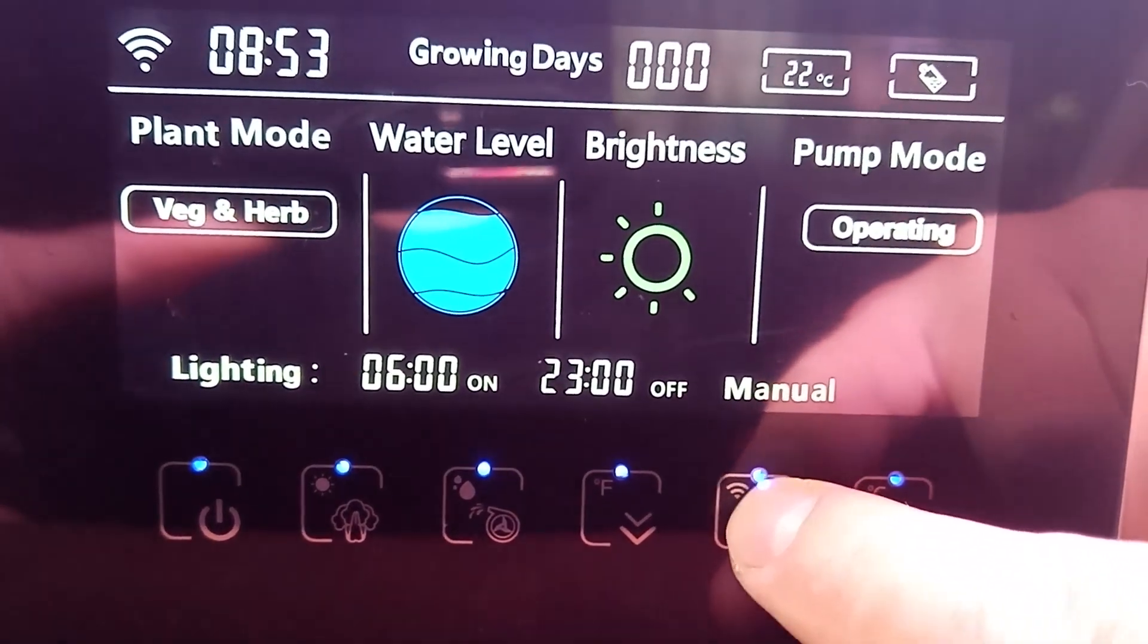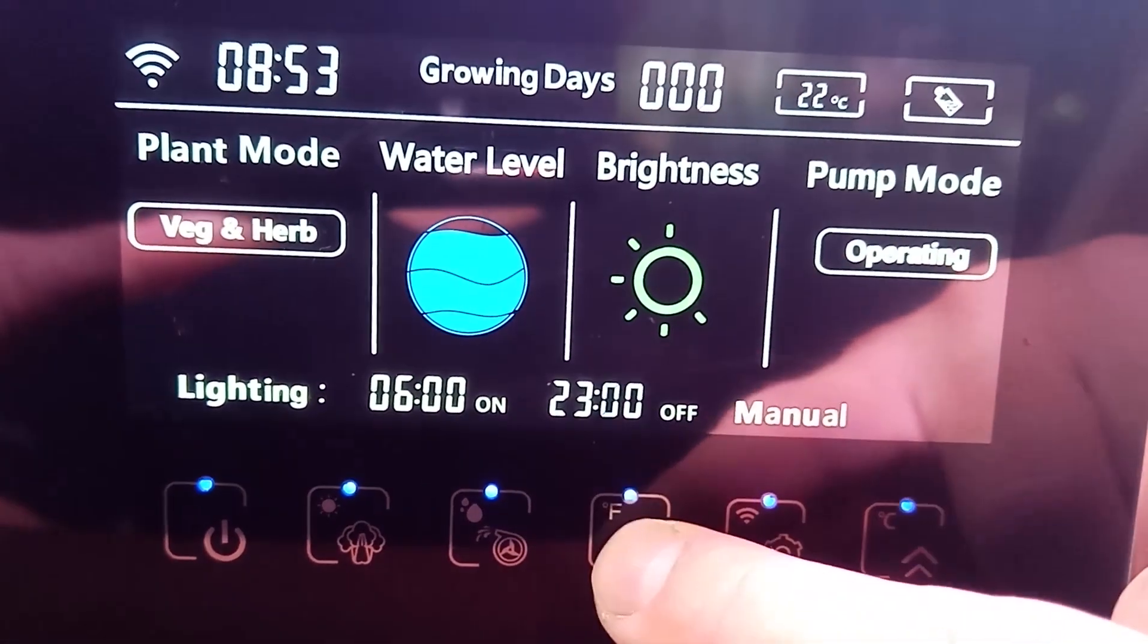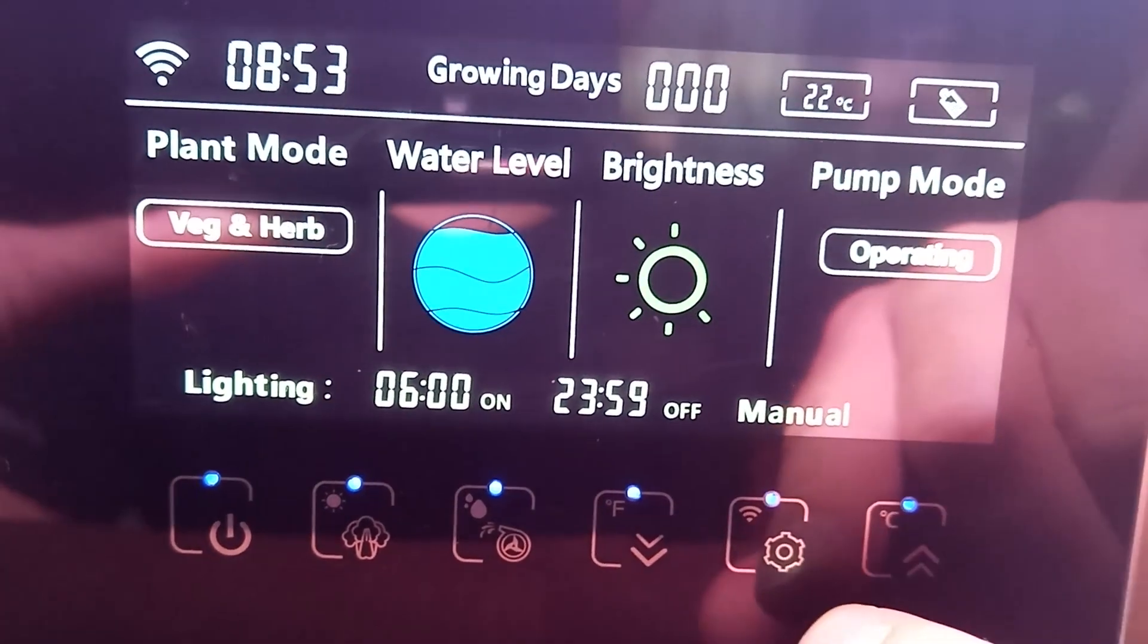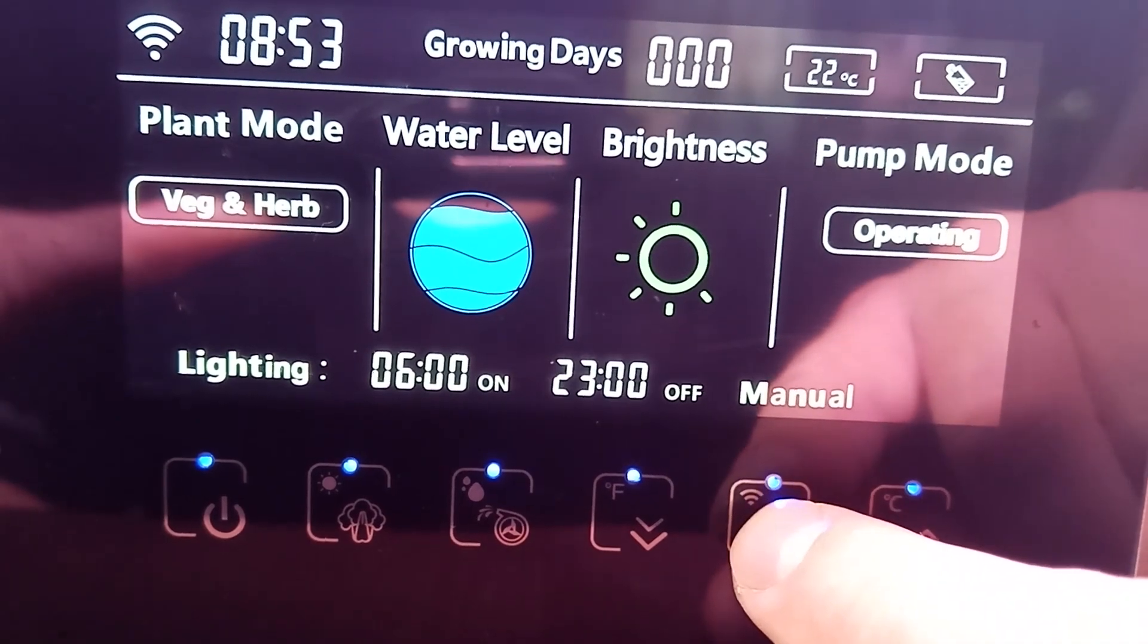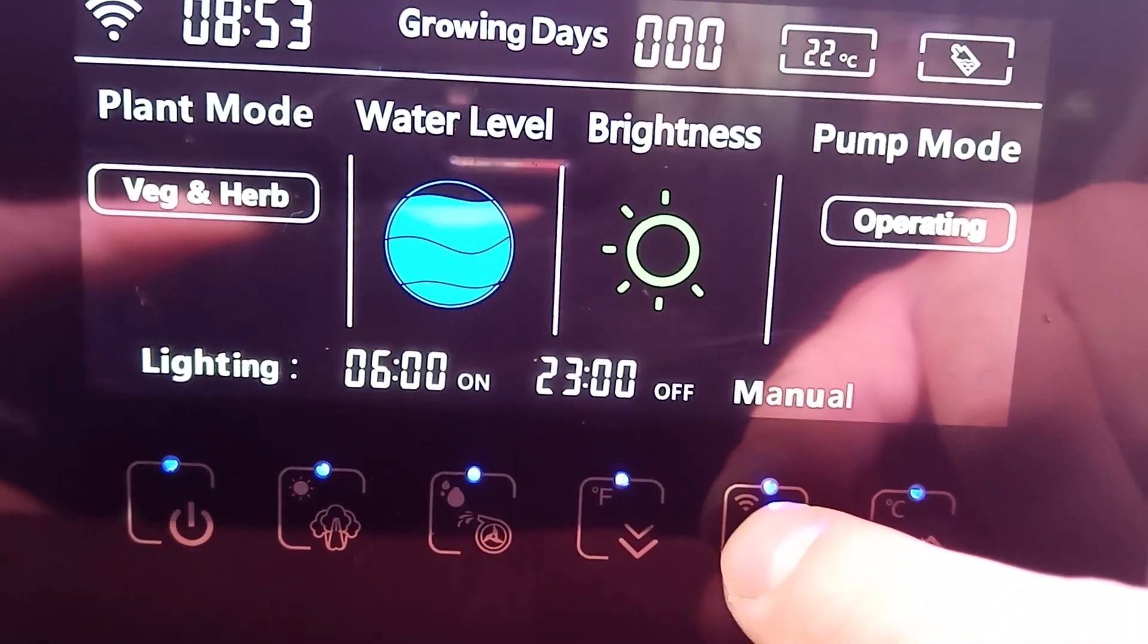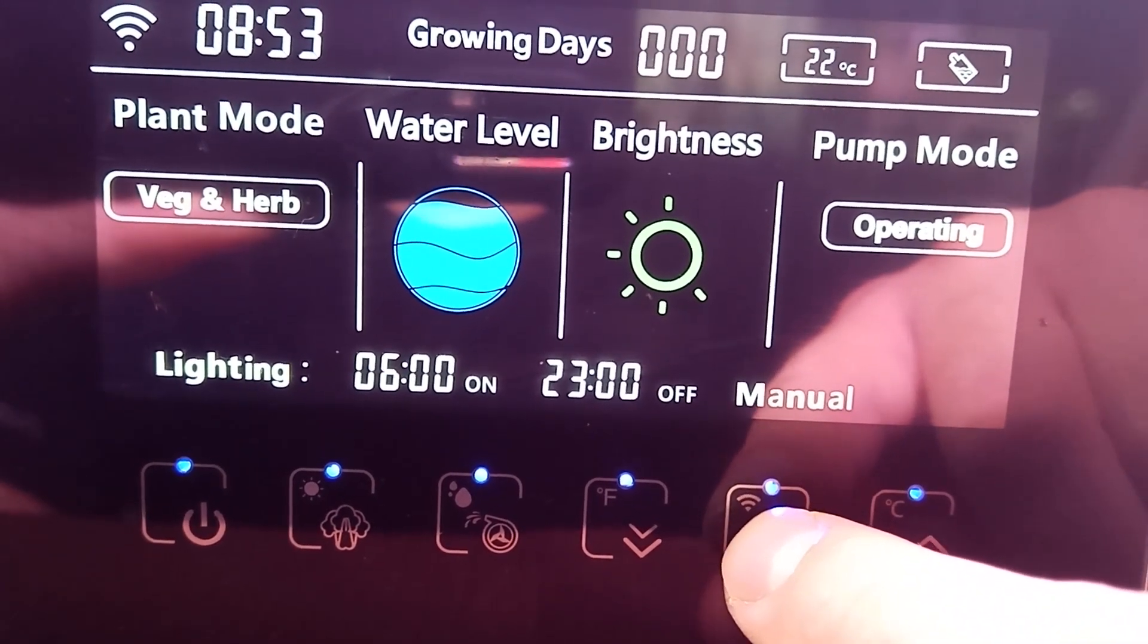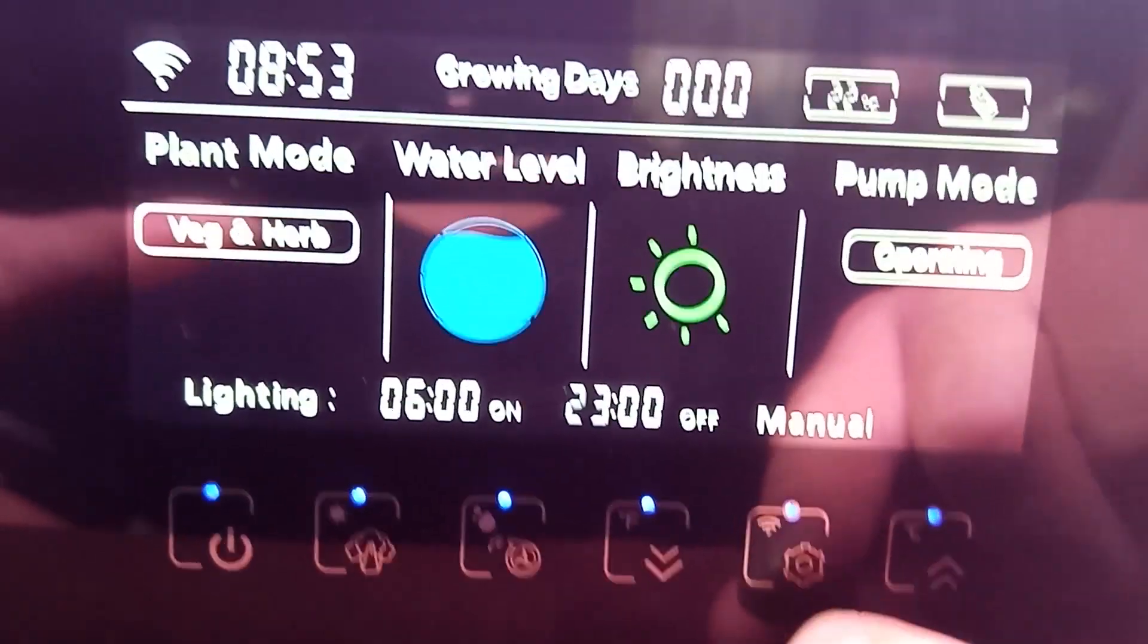Set the current time on the screen, and also program the time when you want the light to turn on and off. Next, choose the desired light mode and set the brightness to medium. As the sprouts begin to appear, increase the brightness to the maximum level. That completes the initial setup of the system.